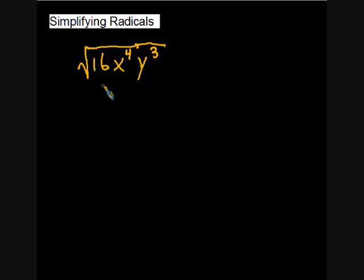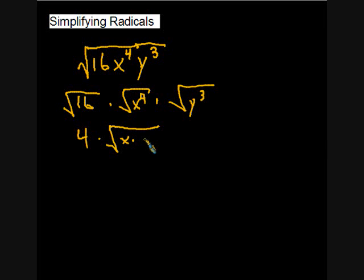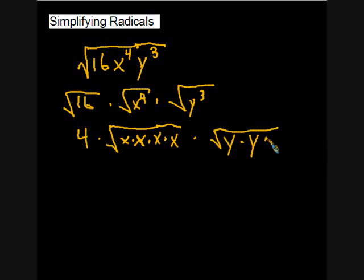Let's try one with variables. We can break the expression up into square root of sixteen, times square root of x to the fourth, times square root of y cubed. Square root of sixteen is simply four. Square root of x to the fourth is the same as square root of x times x times x times x — that's four x's under the square root sign multiplied together. And square root of y cubed is the same as square root of y times y times y.